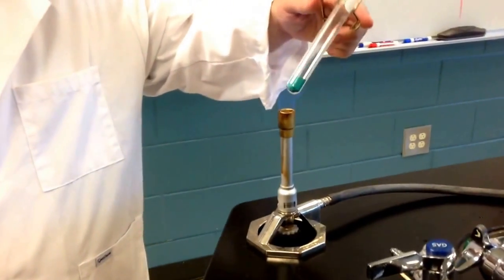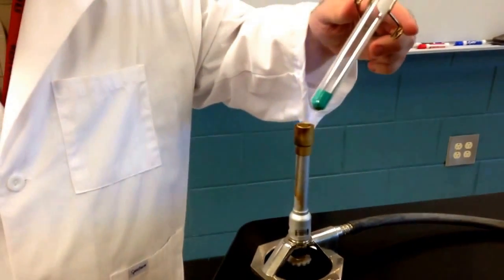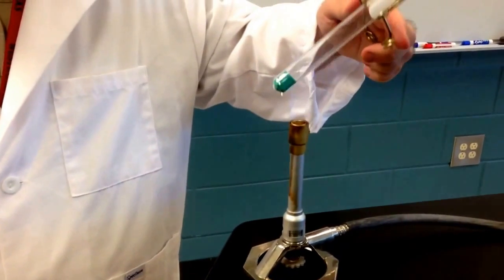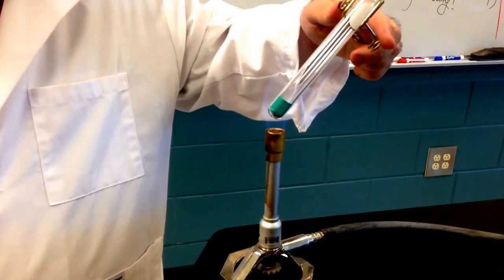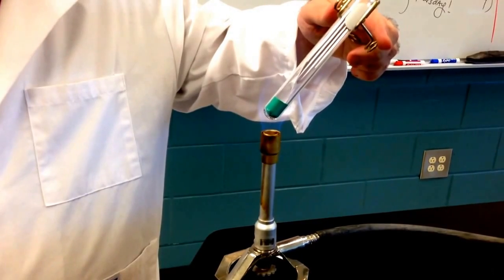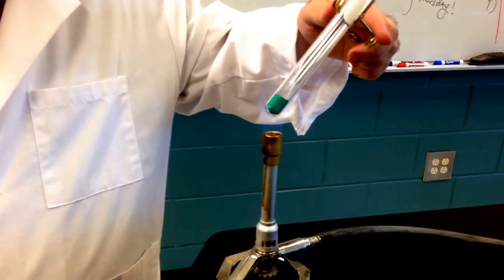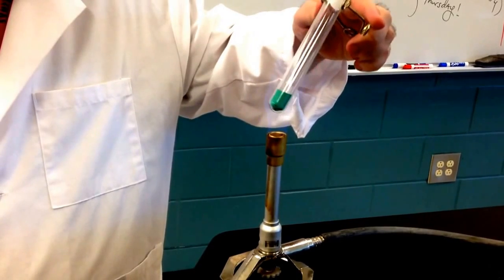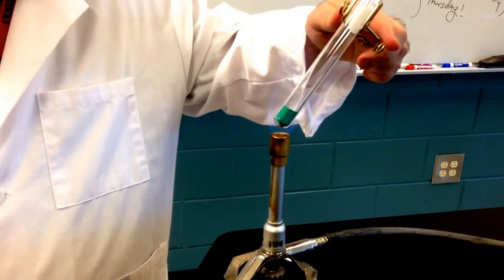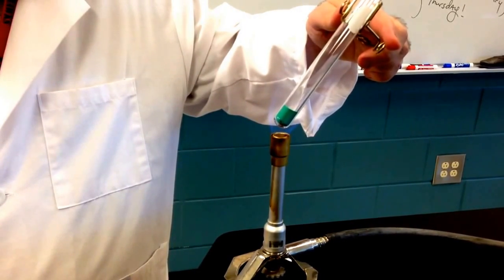Heat the copper 2 carbonate in the flame until you start seeing some movement in the powder. And again, just remember to point the test tube away from yourself, away from others. And it takes just a minute for it to heat up.